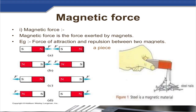Magnetic force is exerted by a magnet. There is a force of attraction or repulsion between two magnets. If two magnets have opposite poles — one north and one south — we see attraction. If both magnets have the same pole (north-north or south-south facing each other), we observe repulsion. If we bring a magnet towards iron nails, all the iron will attract towards the magnet.